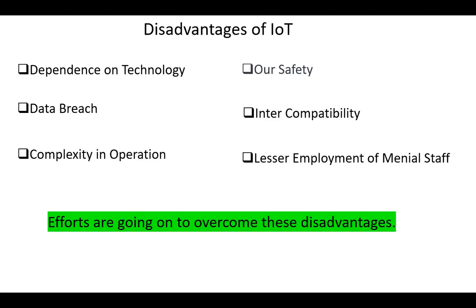Next, lesser employment of manual staff. With daily activities getting automated, there will be less demand for human labor, mainly unskilled workers. The non-educated workers and helpers may lose their jobs, which leads to an increase in unemployment.